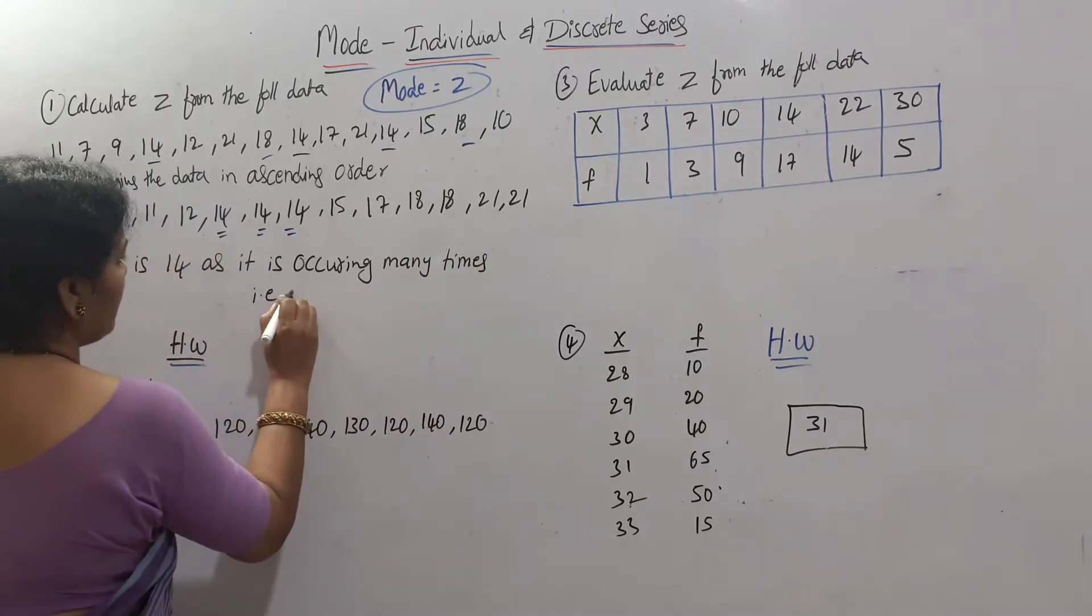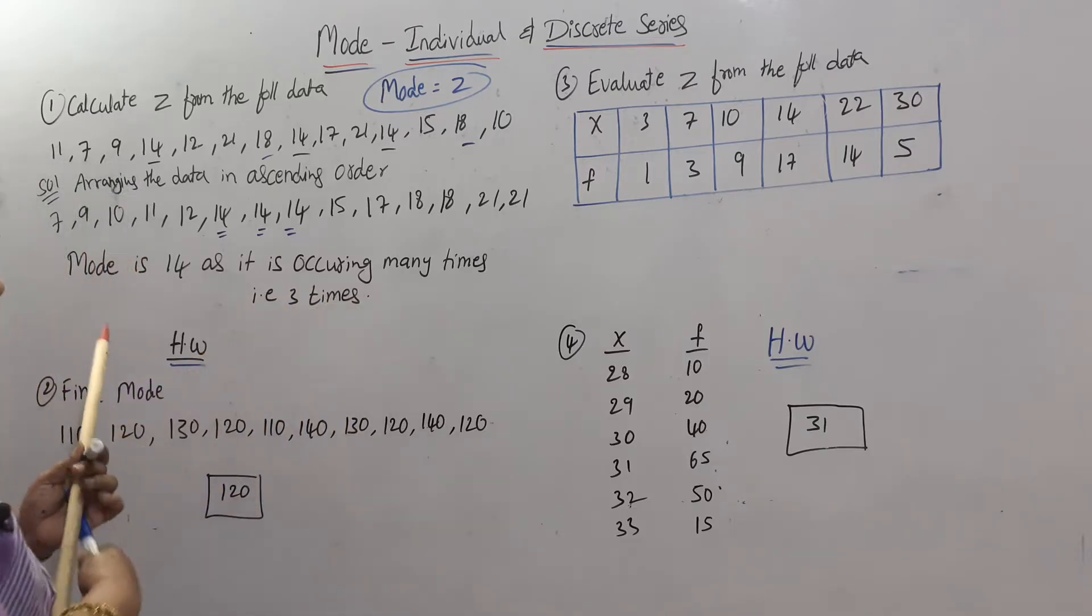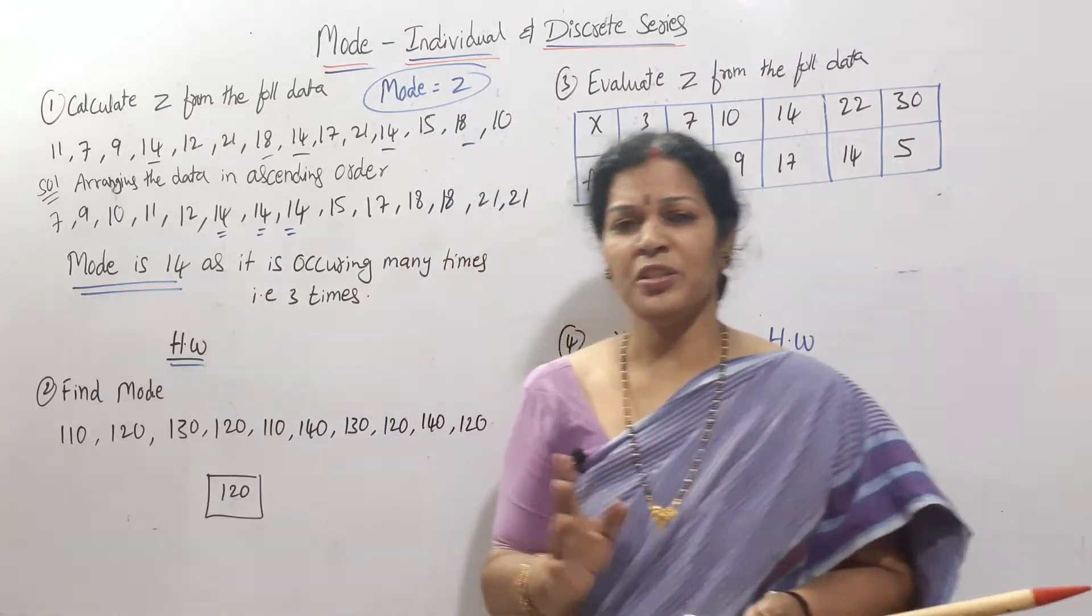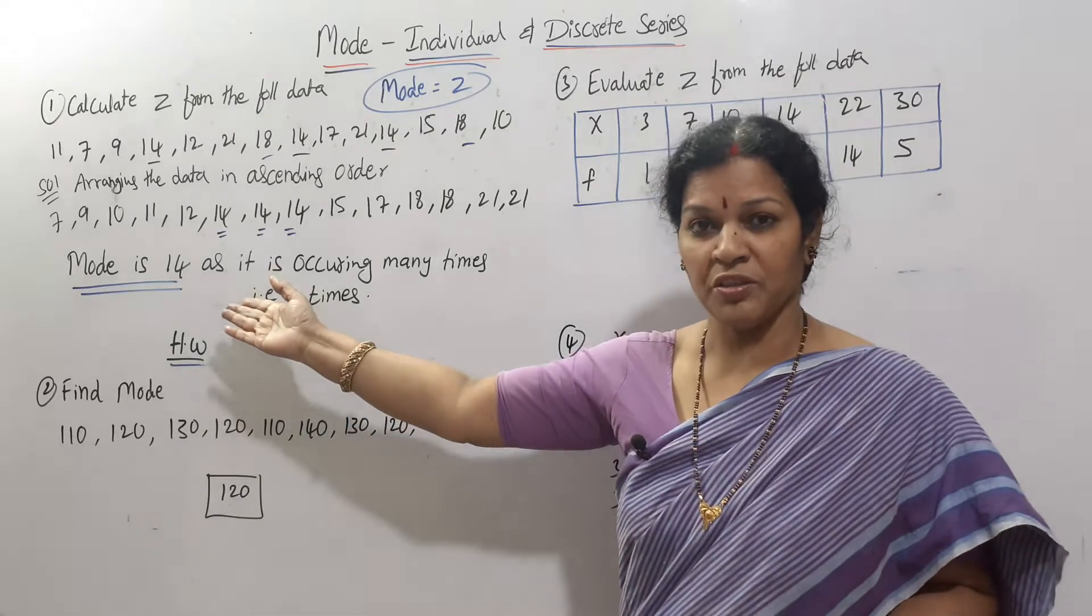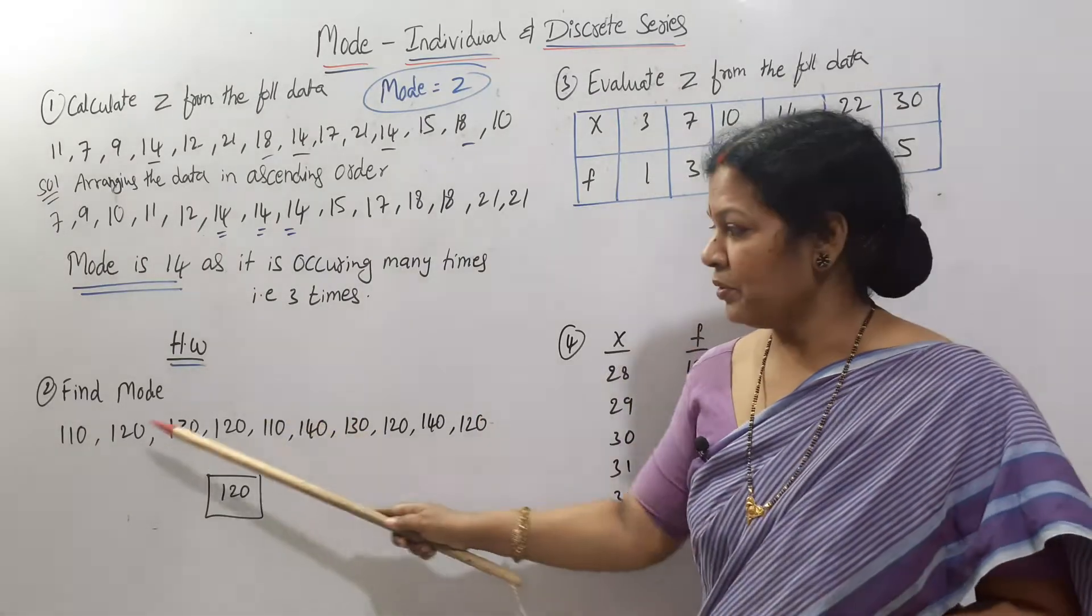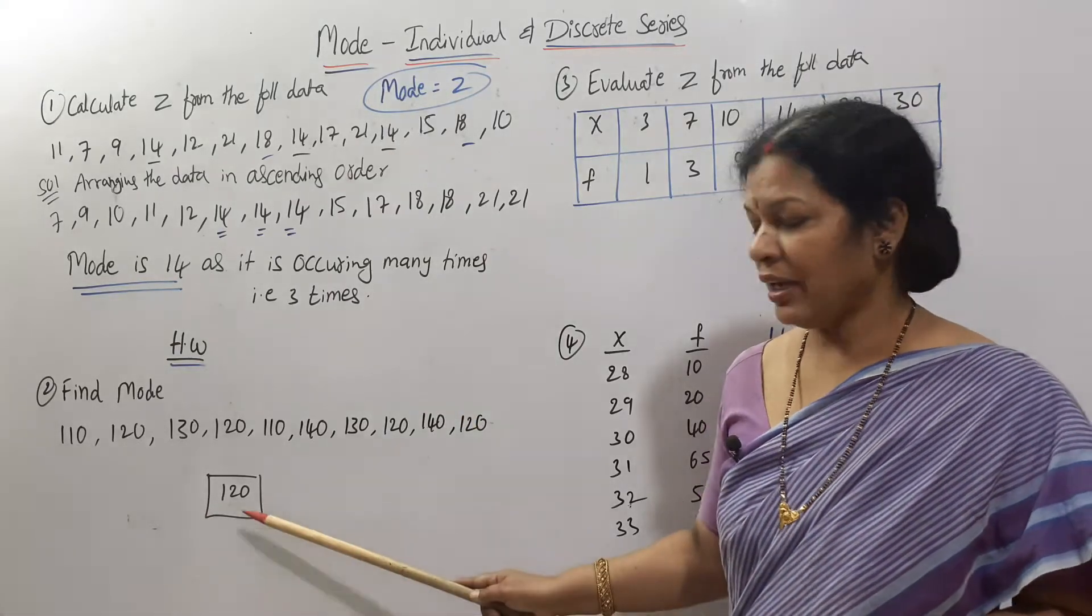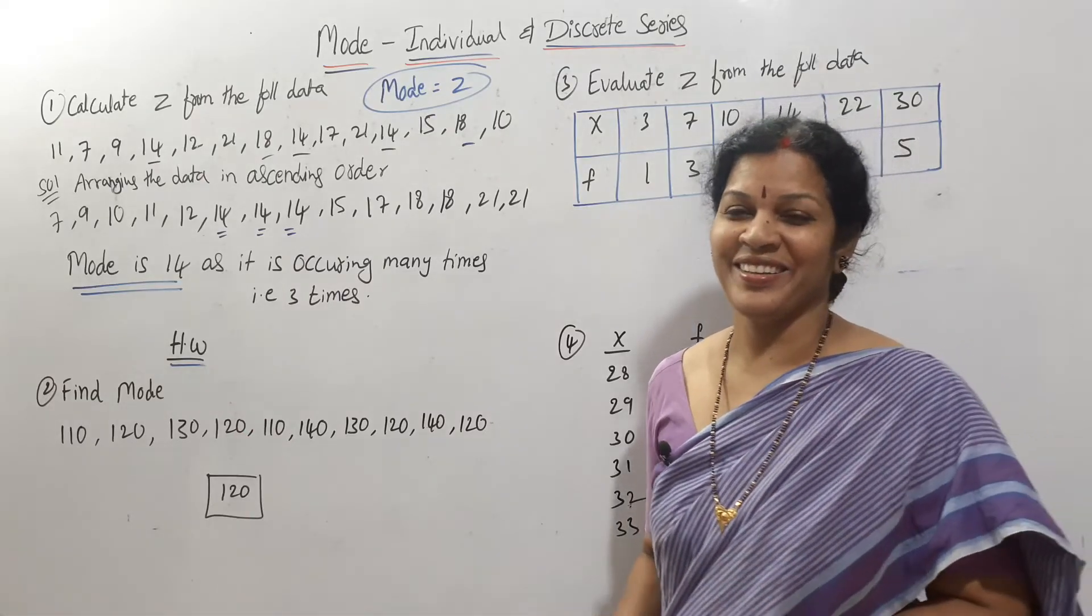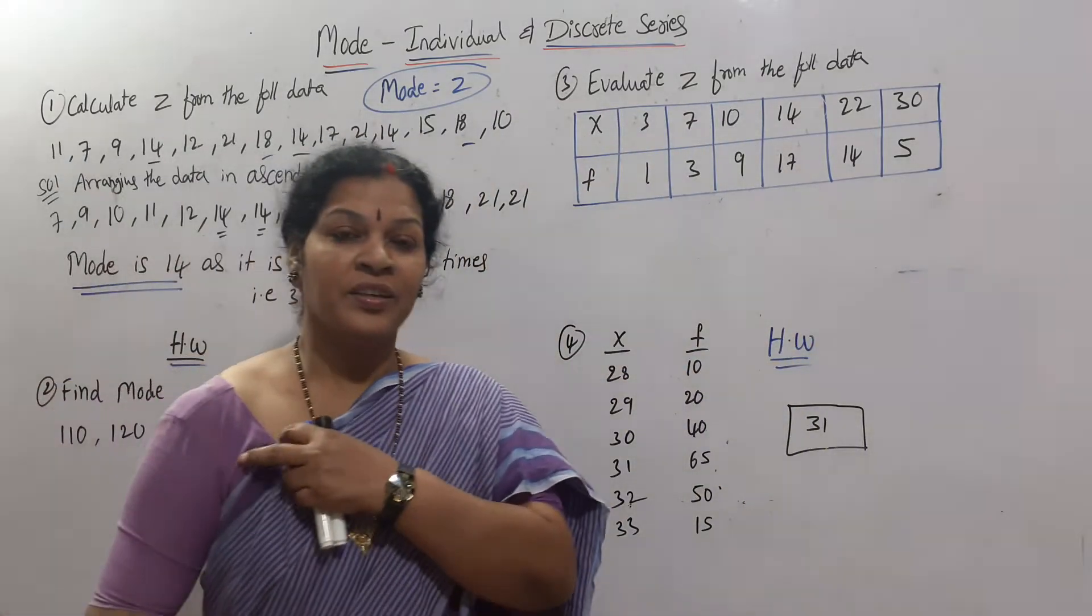In individual series it is very simple; you just have to identify which number is repeating many times. 14 is repeating thrice - that is mode. This problem is homework for you: find mode. The answer is 120. Now coming to discrete series.